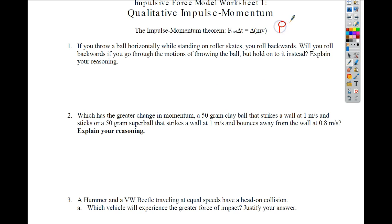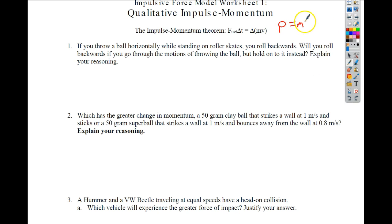Now, momentum can't have the letter M because mass has the letter M, so instead we use P. So momentum is equal to mass times velocity. If I have a change in velocity, that would equal the force times the change in time — it's the same thing.